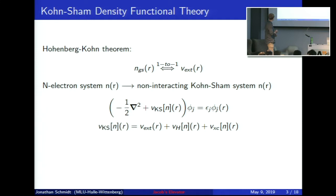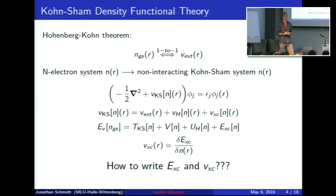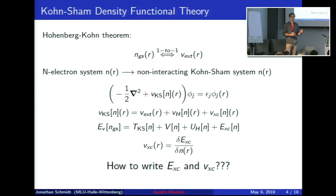Of the Kohn-Sham potential, we know everything besides the exchange-correlation potential, which has to be approximated, and similarly we don't know the exchange-correlation energy. The essential question in DFT has always been how to find an accurate description of this energy and potential, which are connected through a functional derivative. This makes it harder for machine learning, because if we want to do any self-consistent calculation the potential actually has to be the functional derivative of the energy.